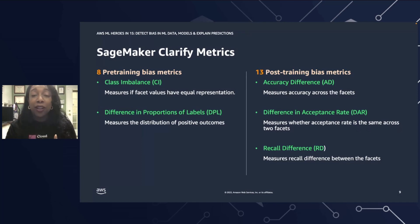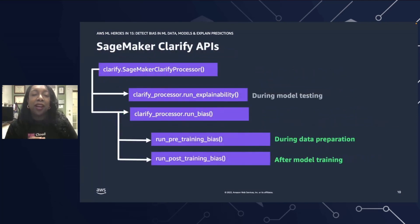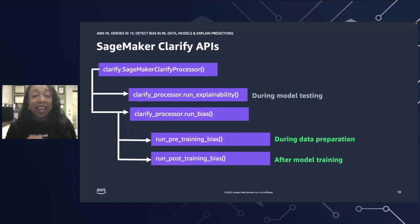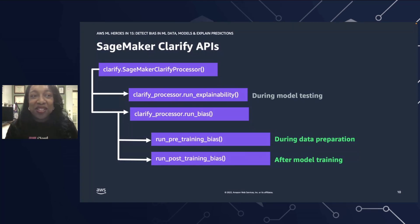For pre-training, we'll look at class imbalance and difference in proportions of labels. For post-training, we'll look at accuracy difference, difference in acceptance rate, and recall difference. Another feature of Clarify that I like — you can call out to the APIs directly from a Jupyter notebook. For pre-training bias, there is a function called run_pre_training_bias, and we use that during the data preparation stage. There's also a function called run_post_training_bias, and that's used after model training. So let's actually see this in action.